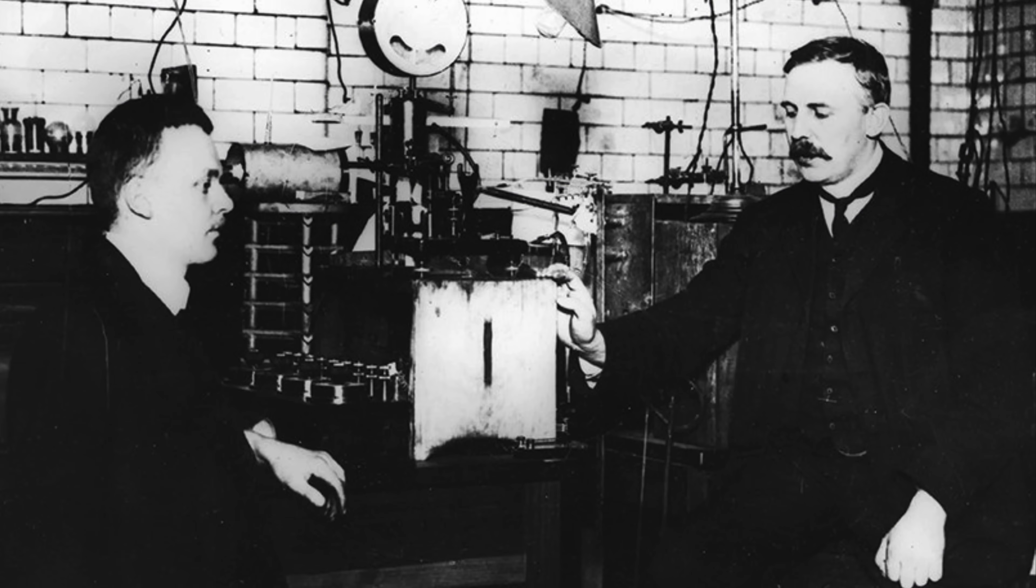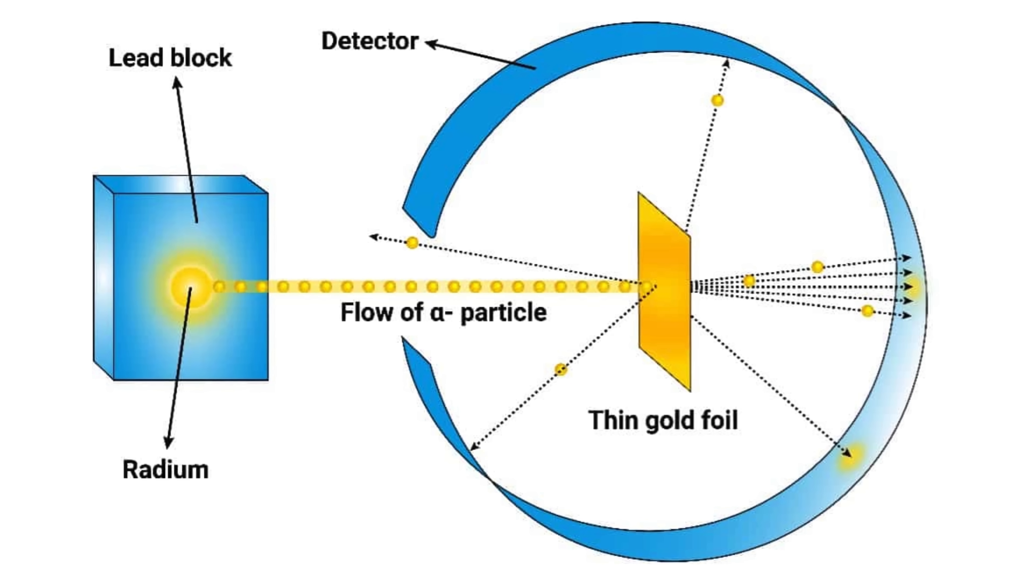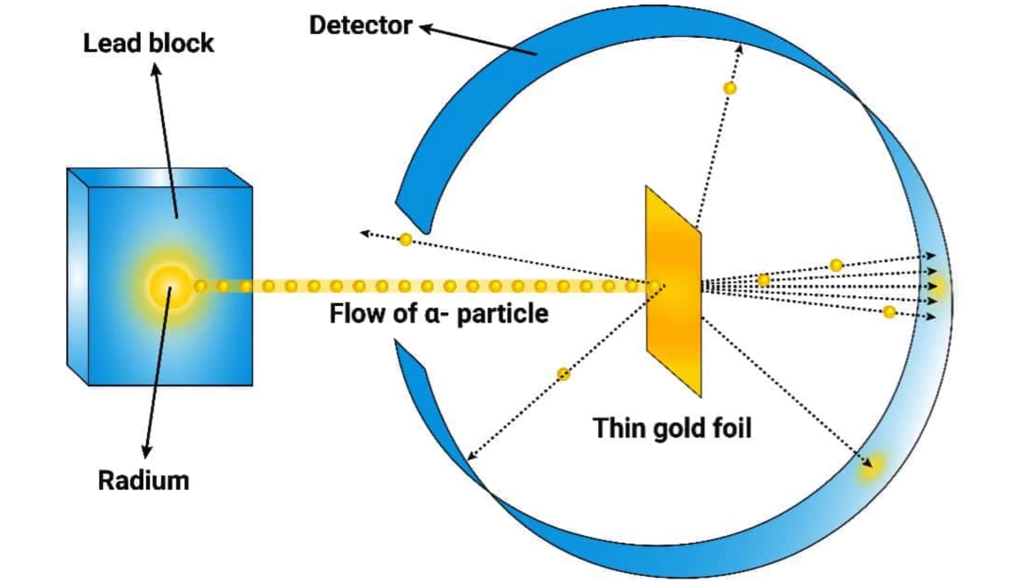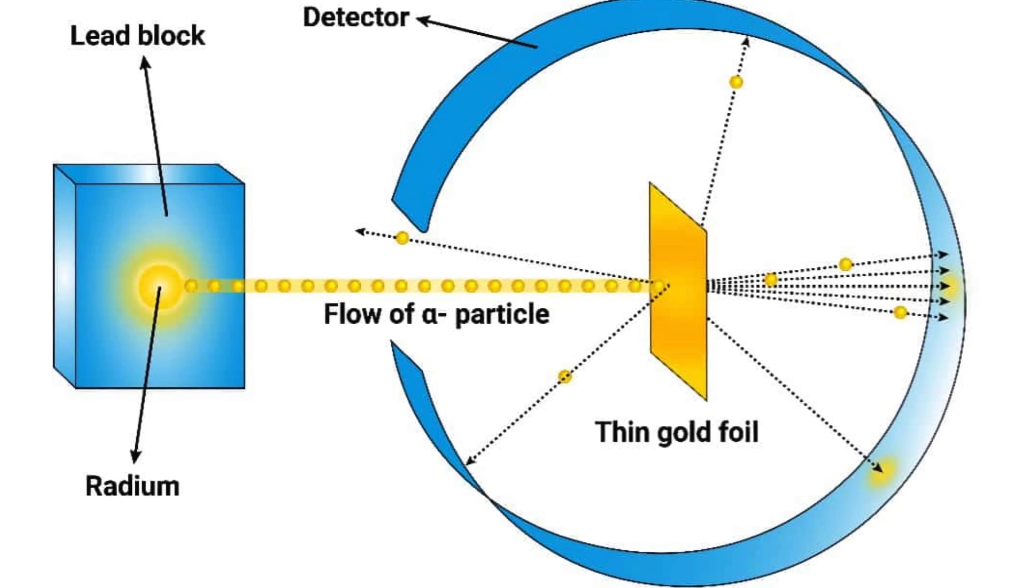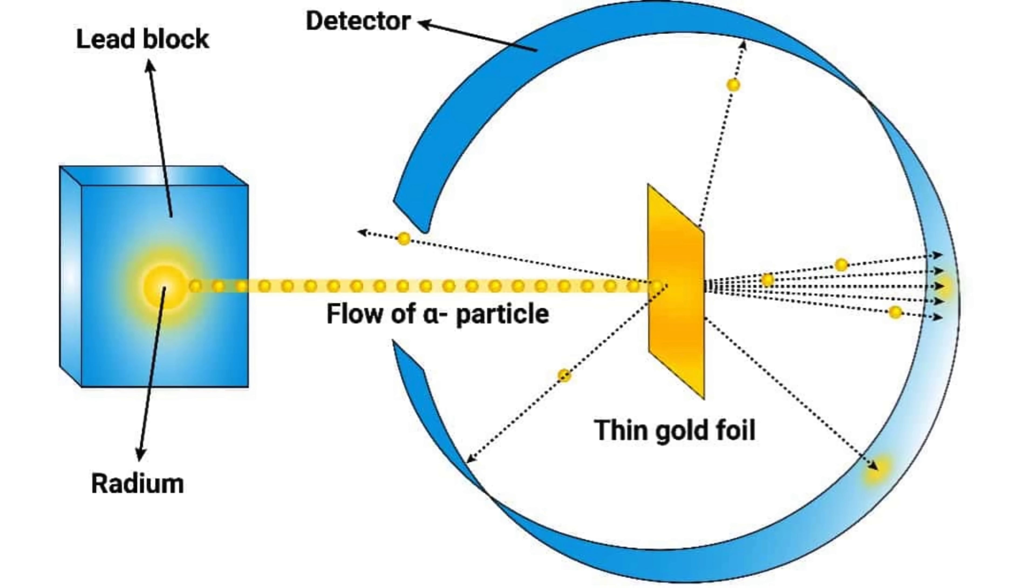In 1911, Ernest Rutherford and his team at Manchester conducted an experiment that would change our understanding of the atom forever: the gold foil experiment. They fired tiny alpha particles—positively charged helium nuclei composed of two protons and two neutrons—at a thin sheet of gold foil, expecting them to pass straight through, based on the prevailing plum pudding model, which assumed that atoms consisted of diffuse positive charge embedded with electrons.